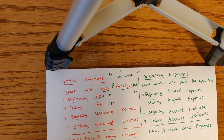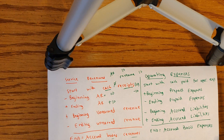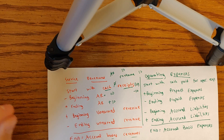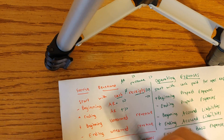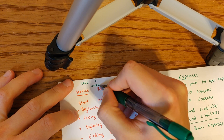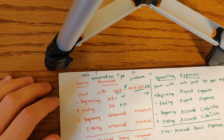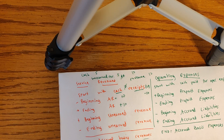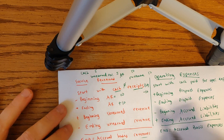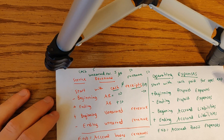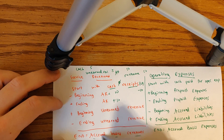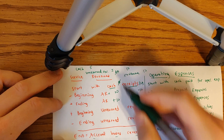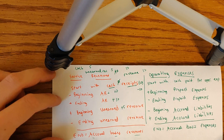Next is beginning unearned revenue — we add that. Beginning unearned revenue represents money we collected in a prior period but had not yet earned. In the prior period we debited cash and credited unearned revenue for, say, $5. In the current period we debit unearned revenue and credit service revenue. There's nothing in current period cash receipts for this, but we've earned the revenue now, so we add $5 to get to accrual-based revenue.